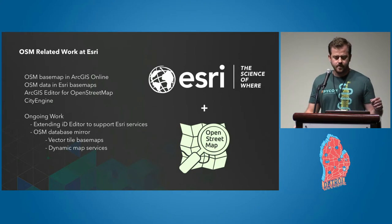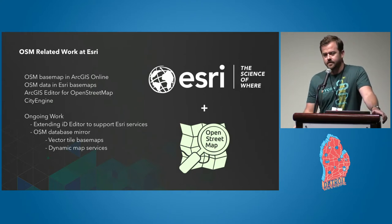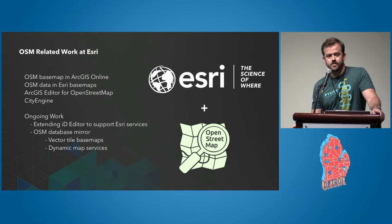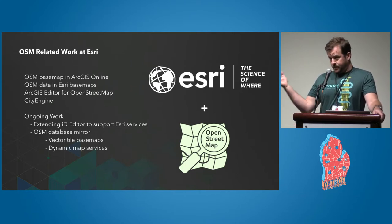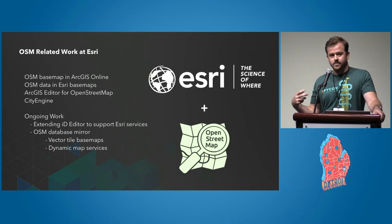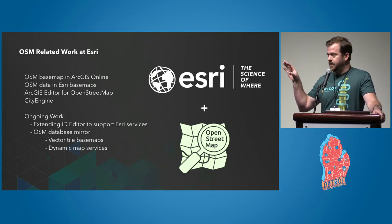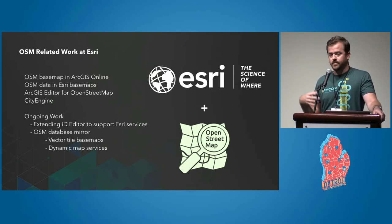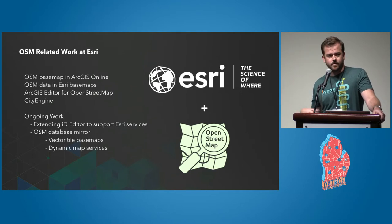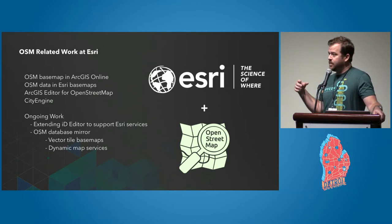The ArcGIS Editor for OpenStreetMap is a legacy product — a free extension for ArcMap, our legacy desktop software. It lets you extract OpenStreetMap data from the main OSM database, puts it into a file geodatabase, which is one of our proprietary file formats, and you can use it for your own mapping or analysis in our software, or you can edit it and push those edits back up to OpenStreetMap.